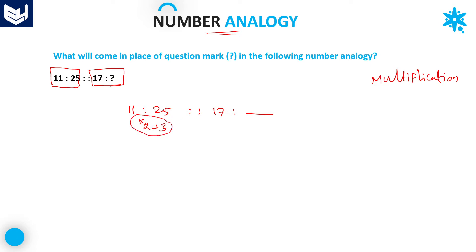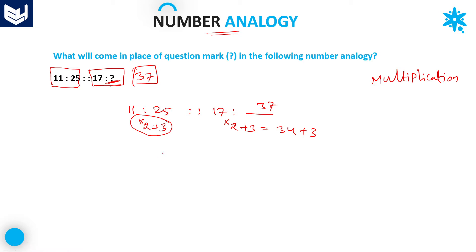Apply the same logic for the next one. That is, 17 into 2 plus 3. 17 into 2 is equal to 34. 34 plus 3, that value is 37. 34 plus 3 is equal to 37. Therefore, in place of this question mark, 37 should be there. That is the answer for this question.